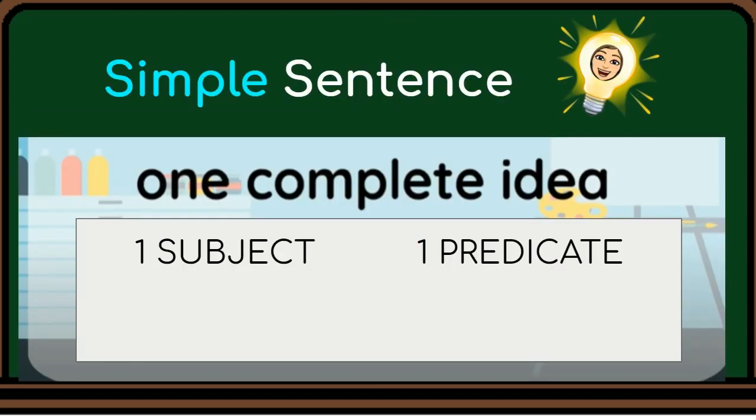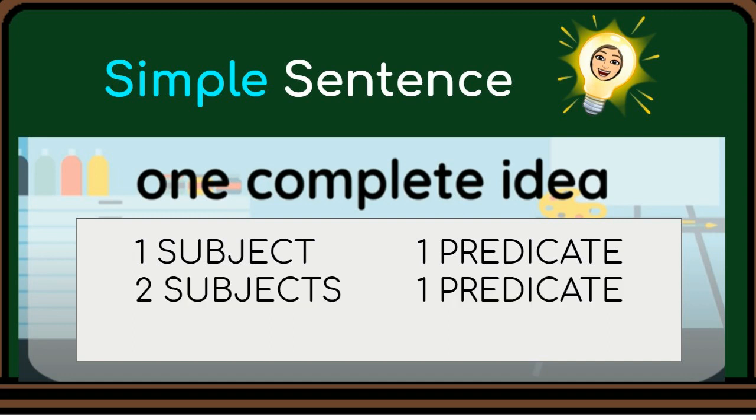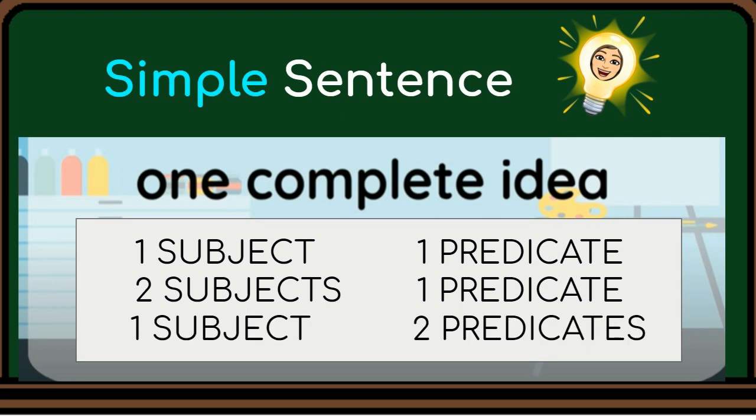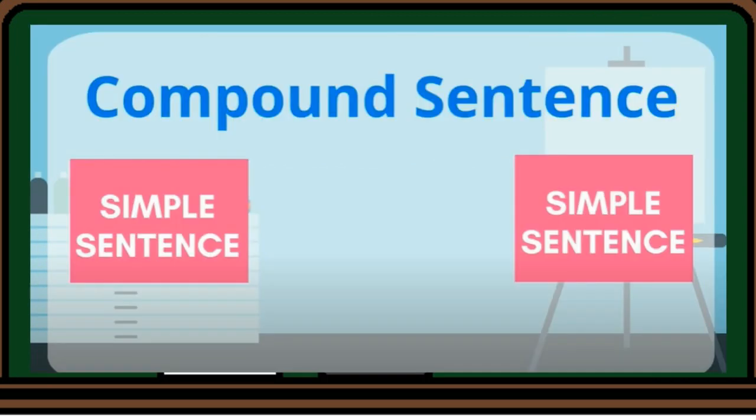In short, a simple sentence has one complete idea with one subject and one predicate, or two subjects and one predicate, or one subject and two predicates.